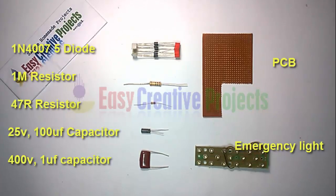5 diodes of 1N4007, 1M resistor, 47 Ohm resistor, 25 volt 100 microfarad capacitor, 400 volt 1 microfarad capacitor, PCB board, and emergency light.